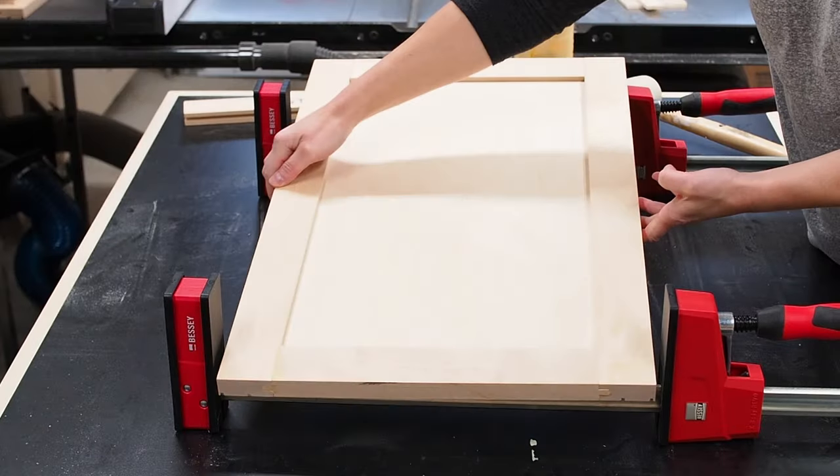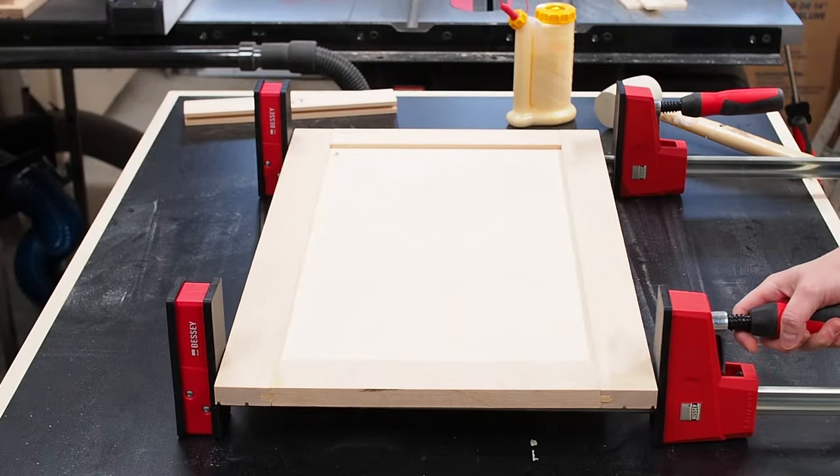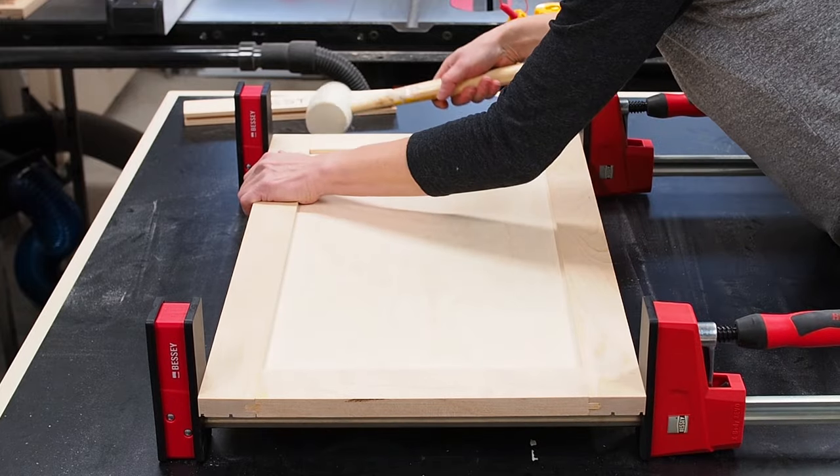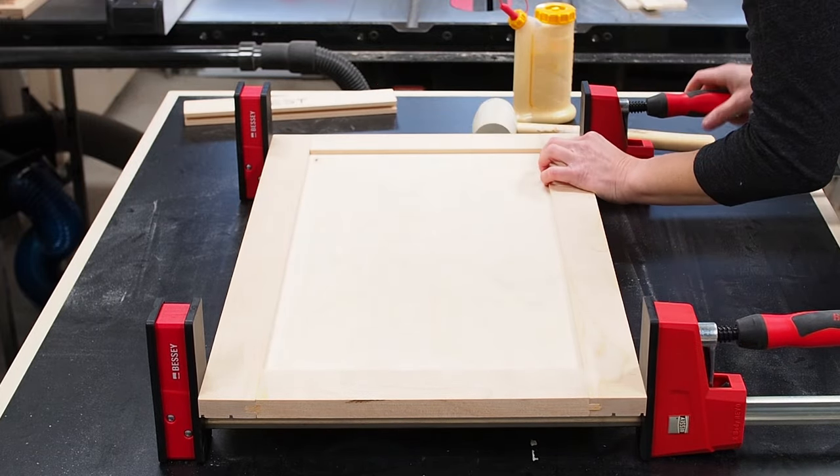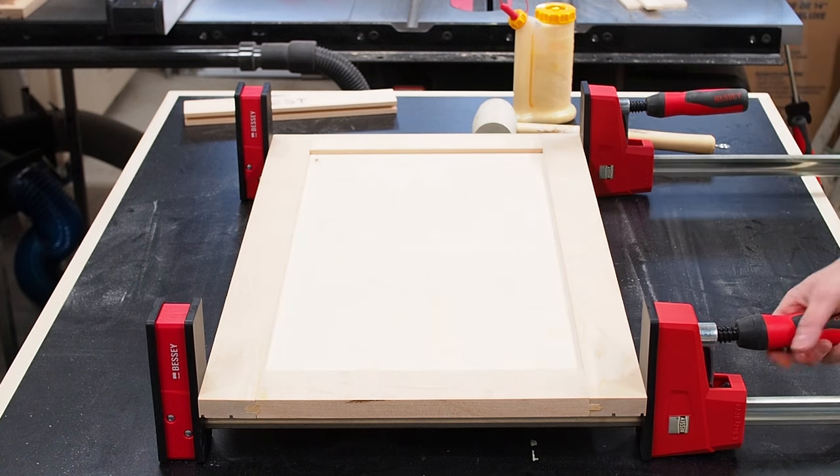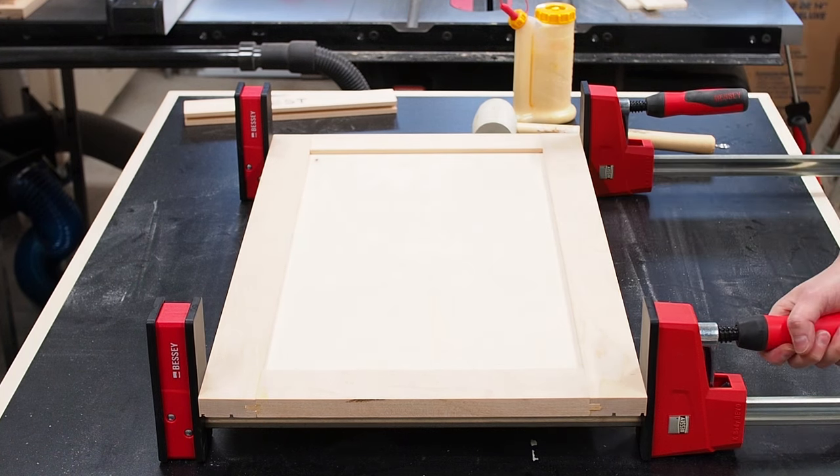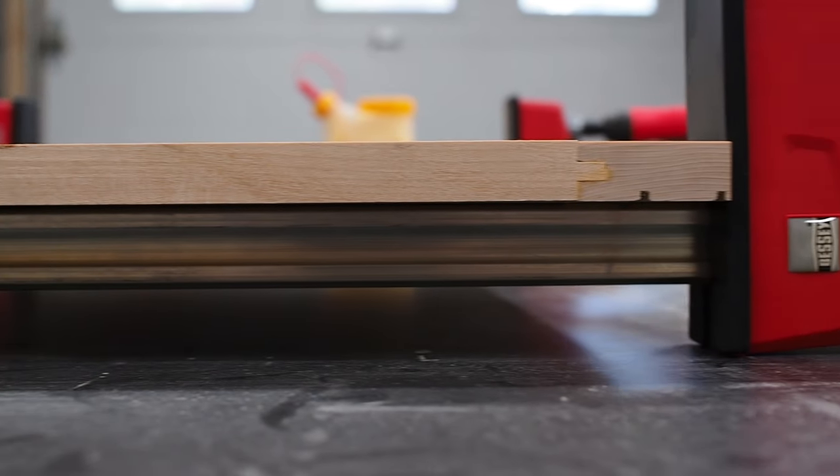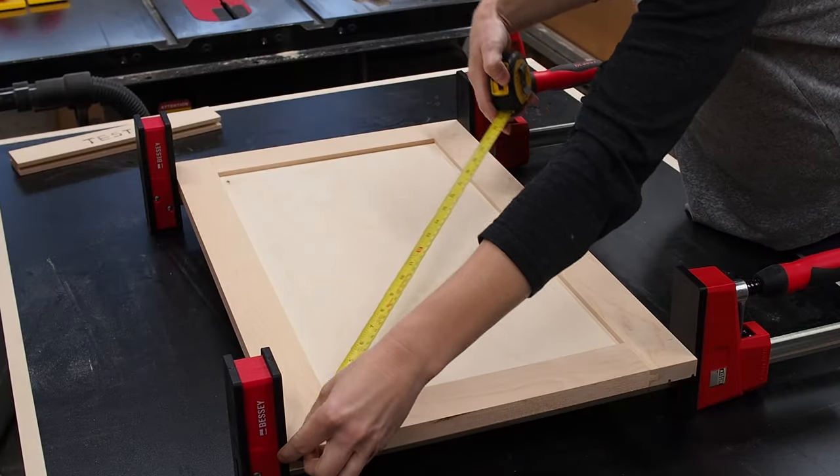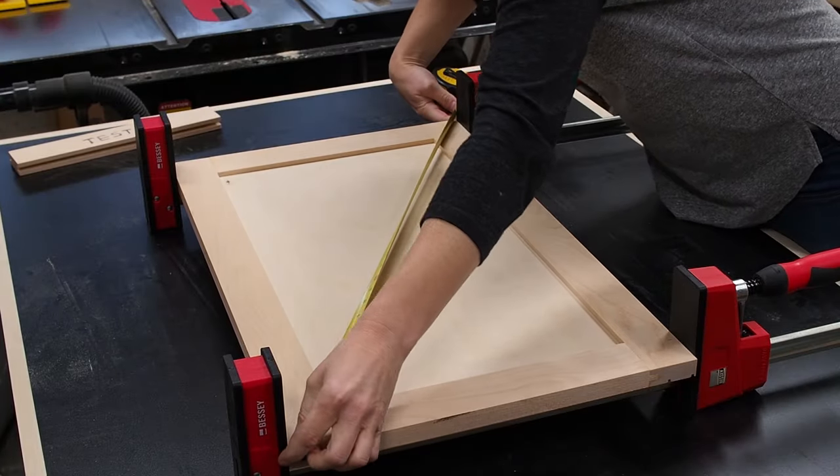I set the door on some clamps and did a final check on alignment before tightening the clamps. You really only need to lightly tighten the clamps without overdoing it, and make sure to apply even pressure to both sides. I checked that the door was nice and flat without any bowing, and then measured to check that both diagonals were the same, to make sure that the door was square. All good here, so I'll let the glue set in the clamps for a few hours.